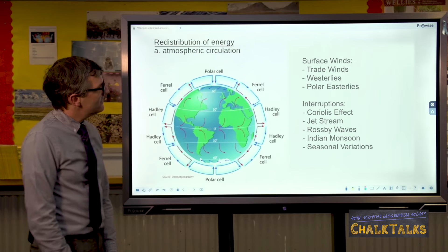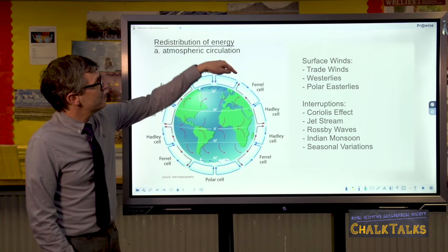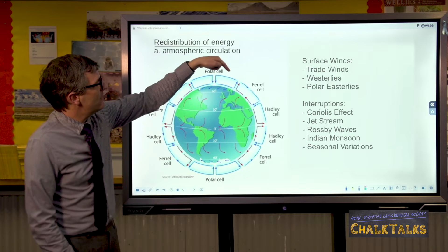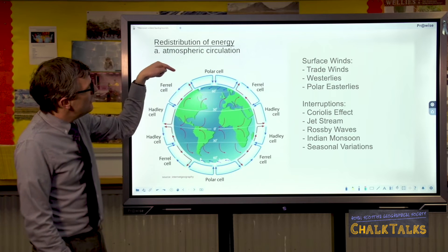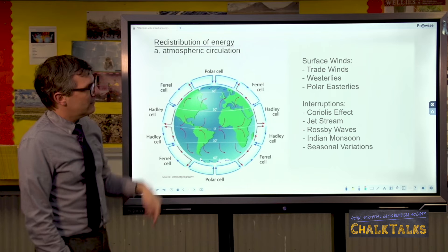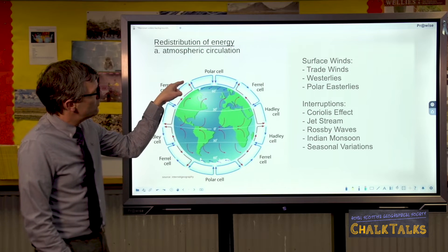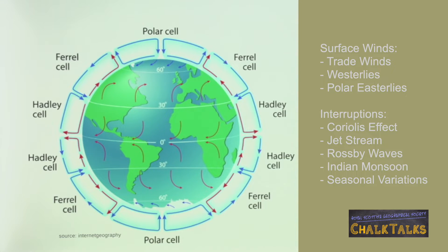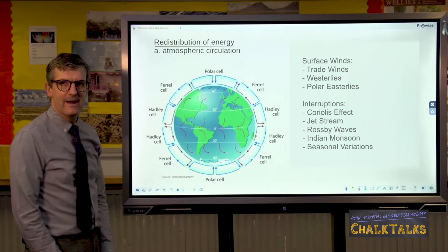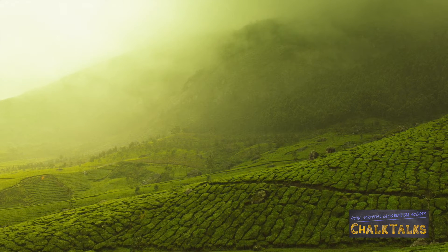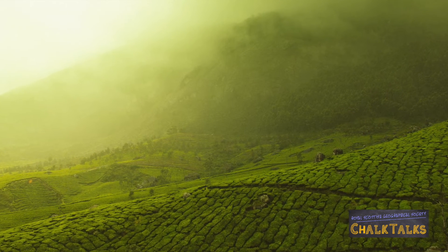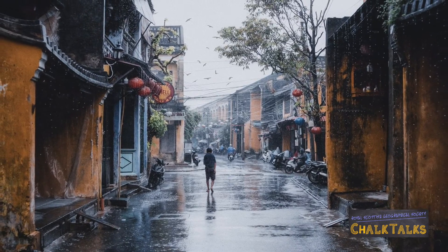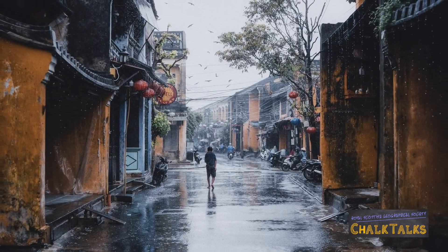This pattern is further interrupted. Above the polar front is the jet stream — a very high powered wind going right the way around the world. It swings to the south and north, called Rossby waves, and that helps to draw cold air south and warm air north, helping to mix up the cold and the warm air. Differences in heating of the land and sea, particularly in places like the Indian subcontinent, creates onshore and offshore winds, interrupting this pattern and creating the monsoon system.